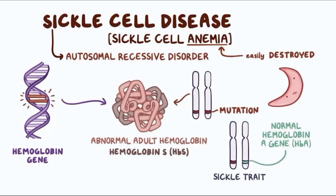Sickle cell disease is caused by mutations in the HBB gene, which provides instructions for making the beta-globin subunit of hemoglobin. Hemoglobin is a protein found in red blood cells that carries oxygen throughout the body. Normally, hemoglobin molecules are shaped like discs, which allows red blood cells to flow smoothly through blood vessels. However, in people with SCD, the HBB gene mutation causes the beta-globin subunits to stick together and form abnormal hemoglobin molecules that can cause red blood cells to become stiff and sickle-shaped.